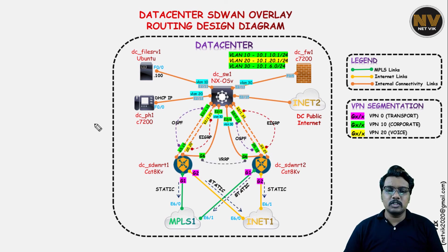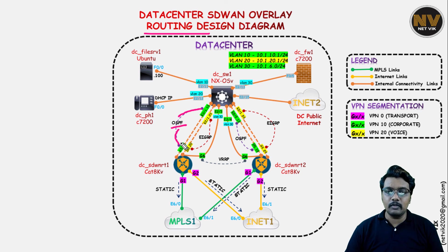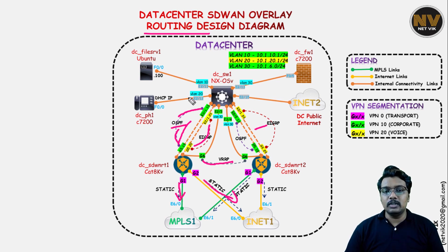One more slide I want to talk about is the routing design diagram. Here I talk about the routing protocol used — for example, on the LAN side we are going to use OSPF for the VPN 10 interface and EIGRP for the VPN 20 interface. We will also configure VRRP between the two LAN-facing interfaces, whereas on the WAN side we are going to use static routing.